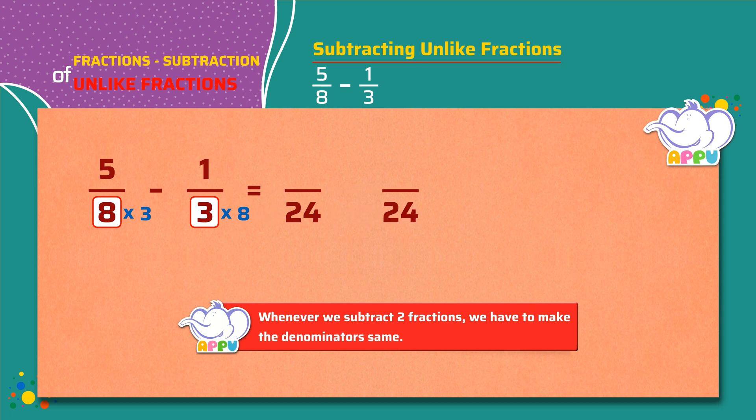Since we multiply the denominator of the first fraction with 3, we multiply the numerator with the same number. That is 5 times 3. We get 15 by 24. Since we multiply the denominator of the second fraction with 8, we multiply the numerator with the same number. That is 1 times 8. We get 8 by 24.